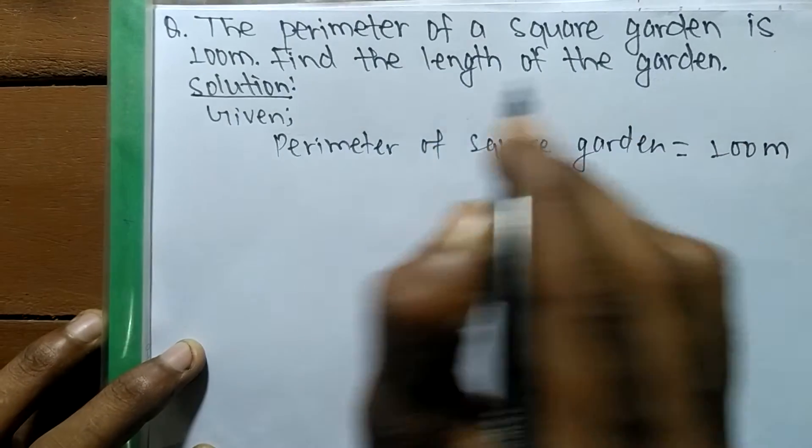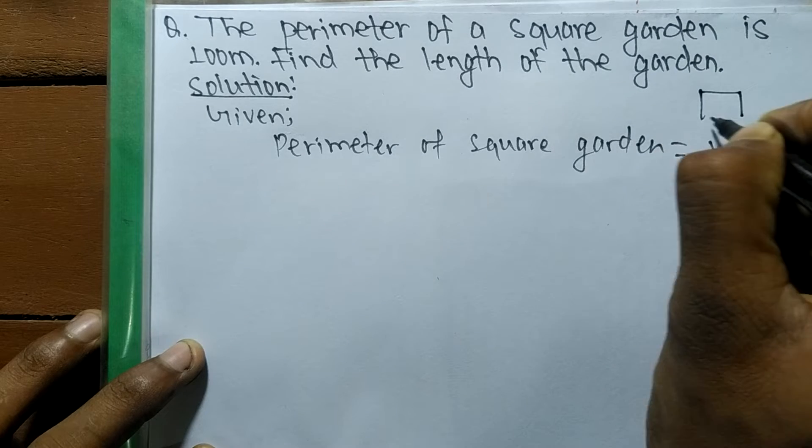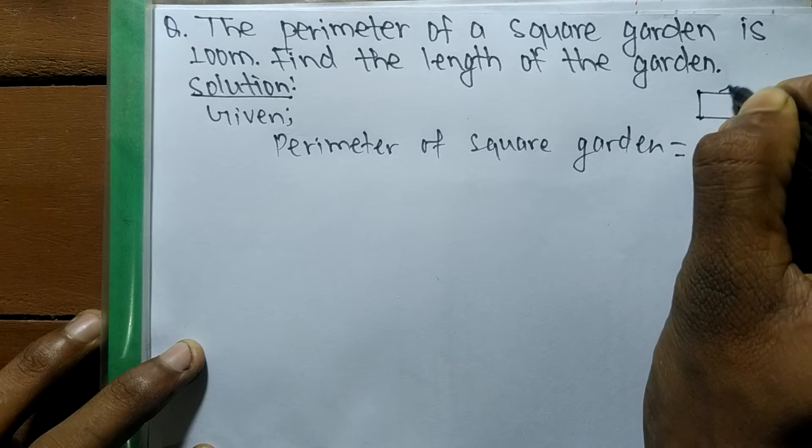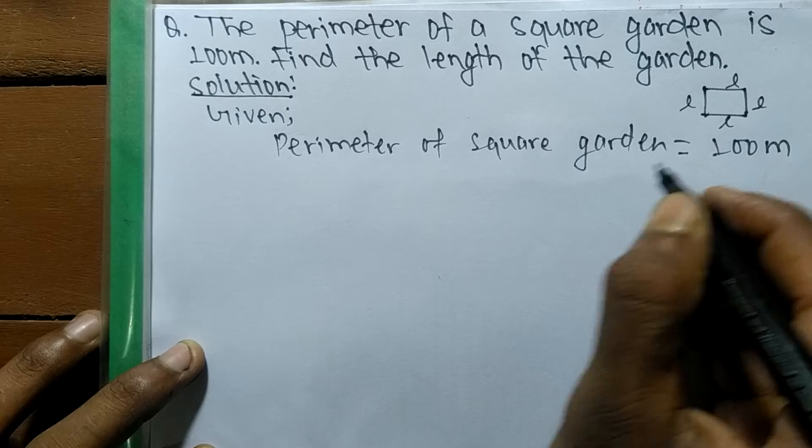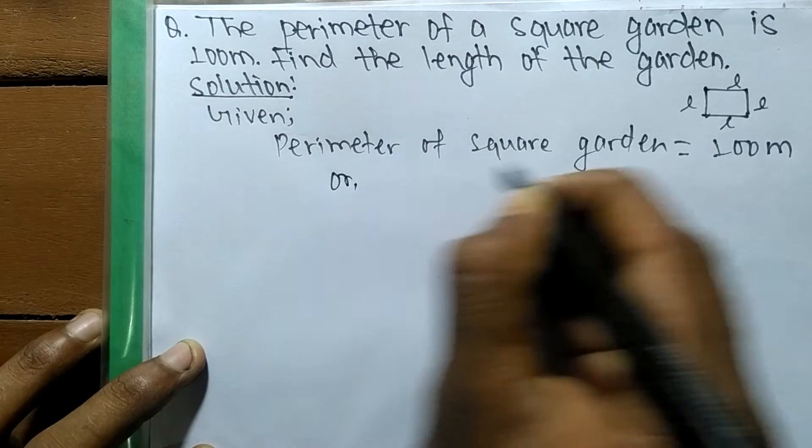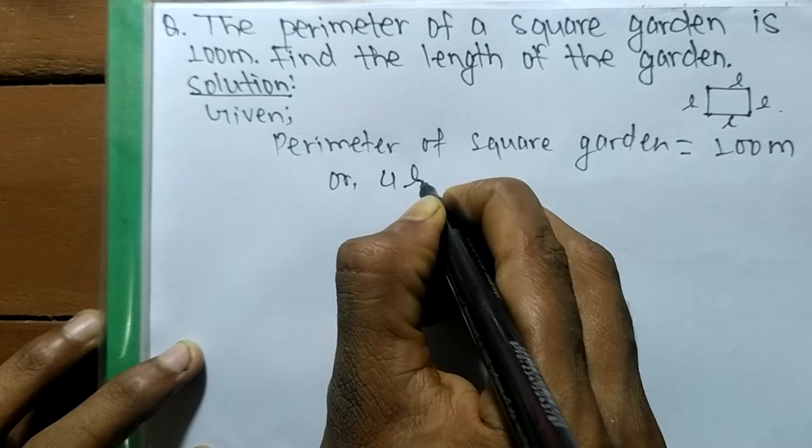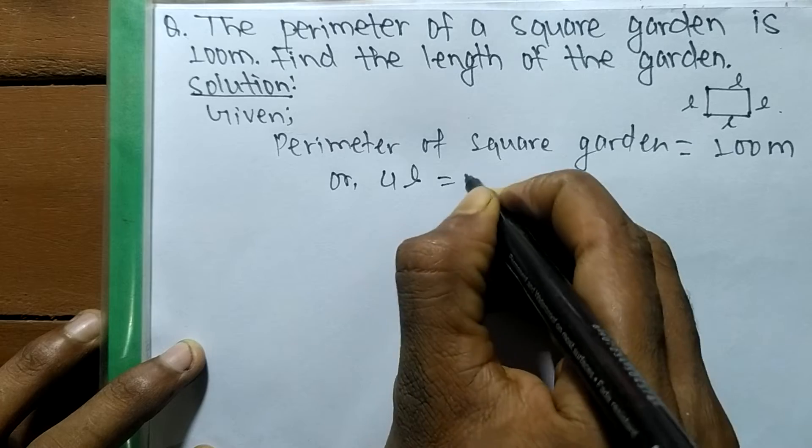Perimeter of a square garden means suppose this is a square and all sides are equal—suppose this is L, L, L, L. So perimeter means sum of all sides, so we got here 1, 2, 3, 4 L—four L, where L is the length of each side.